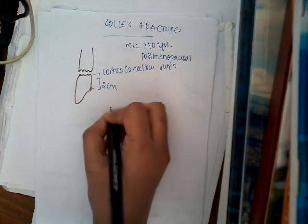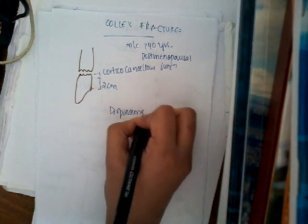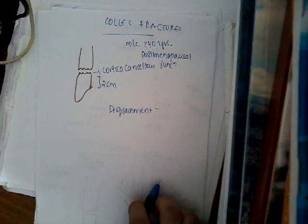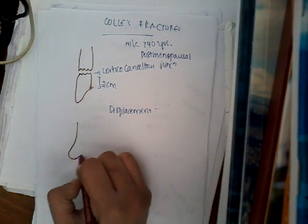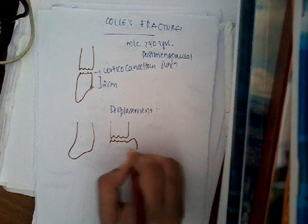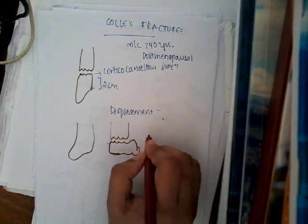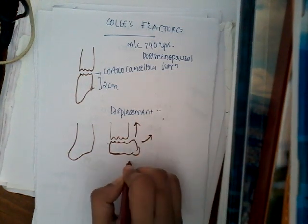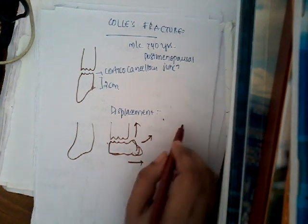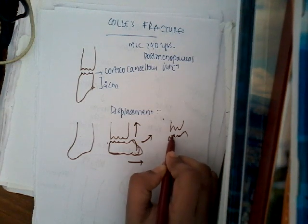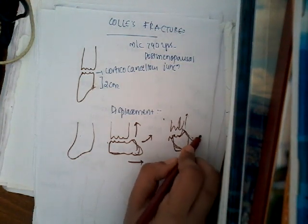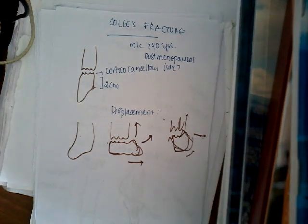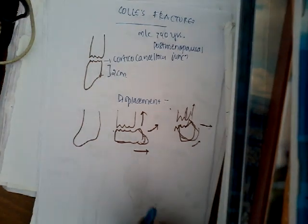Regarding the pathoanatomy, Colles fracture is a most displaced fracture - it is easily displaced. There are different types of displacement: proximal shift, radial shift, radial tilt, dorsal shift, or dorsal tilt. Displacements are not simple in Colles fracture.